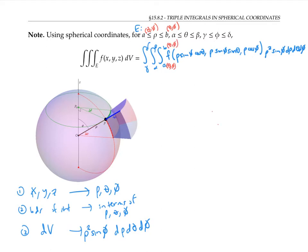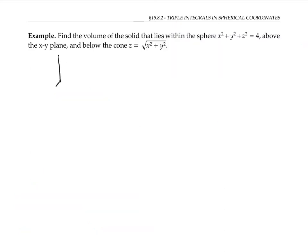I haven't explained where rho squared sine phi comes from yet. I'm going to do an example first and then give an informal justification. Let's use spherical coordinates to find the volume of the solid that lies within the sphere of radius two around the origin, and below the cone given by z equals the square root of x squared plus y squared — that's the stuff outside the cone but inside the sphere.